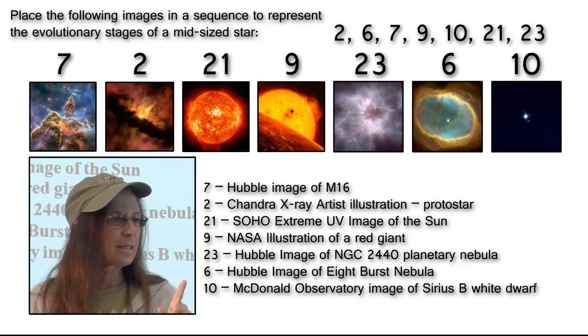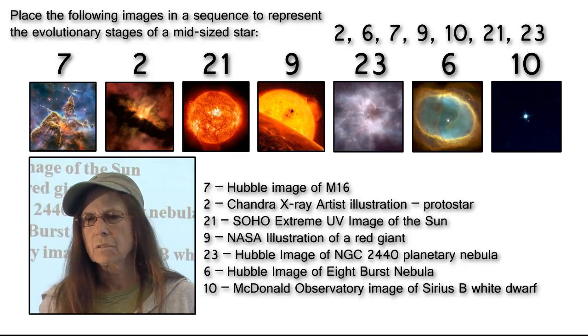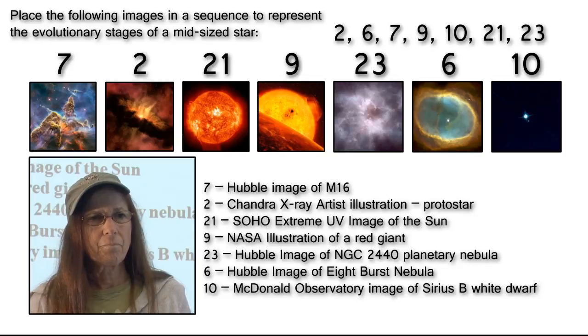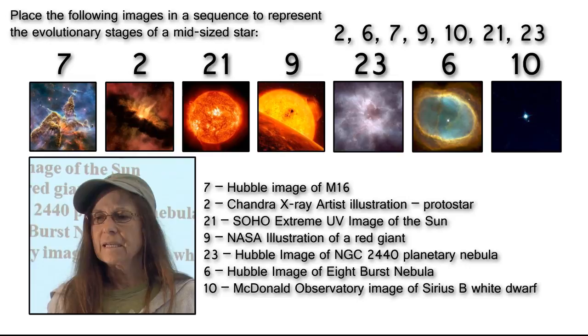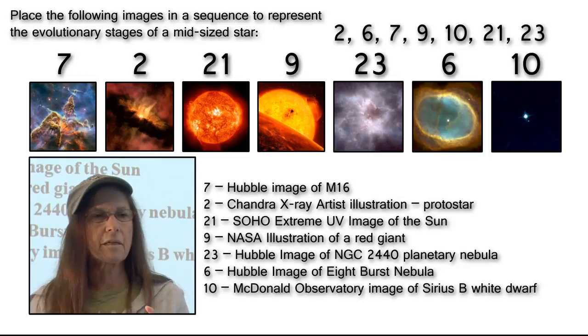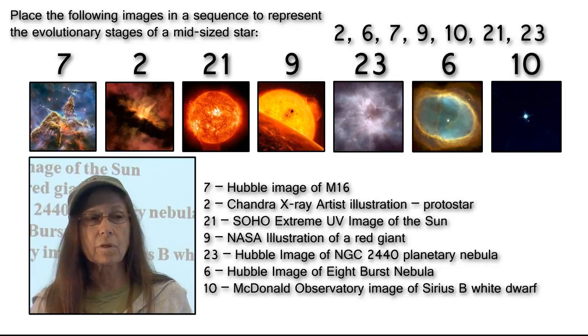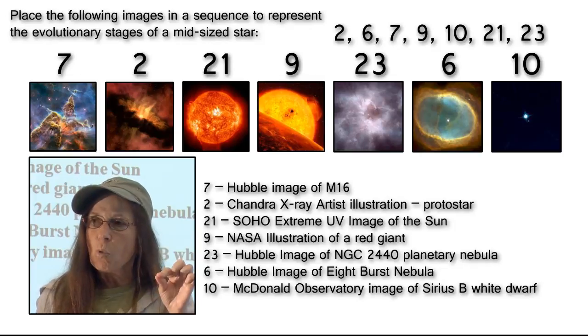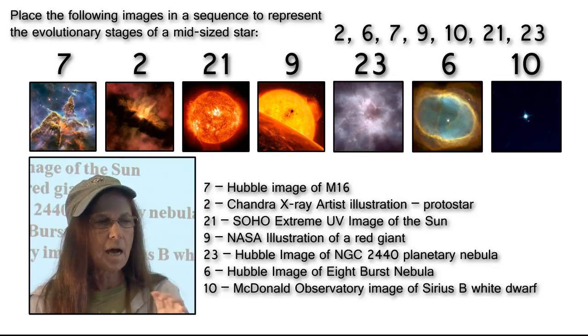So, for instance, that image of a white dwarf is an optical image. Now, it is Sirius B. Sirius B is a multiple star system and it has a companion star, Sirius A. Well, white dwarfs radiate really poorly in optical. So, in this particular image, 10, the dim one you can barely see next to the bright one, that is the white dwarf, not the big white one.